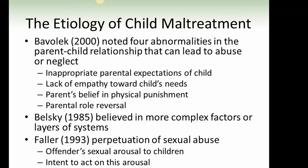The etiology of child maltreatment: Bavilek noted four abnormalities in the child-parent relationship that can lead to abuse or neglect — inappropriate parental expectations of the child, lack of empathy toward the child's needs, parents' belief in physical punishment, and parental role reversal. Belsky believed in more complex factors or layers of systems. Faller identified perpetuation of sexual abuse through offender sexual arousal to children and intent to act on that arousal.